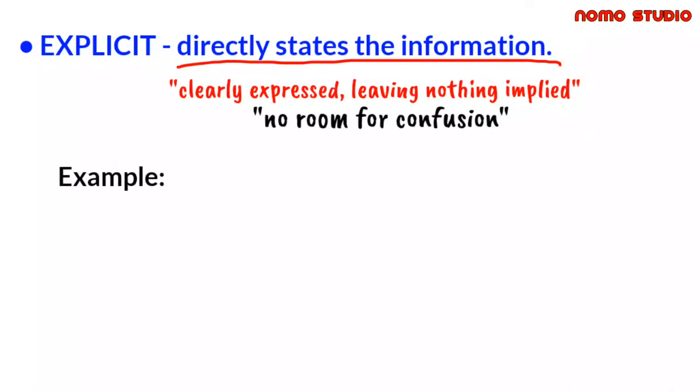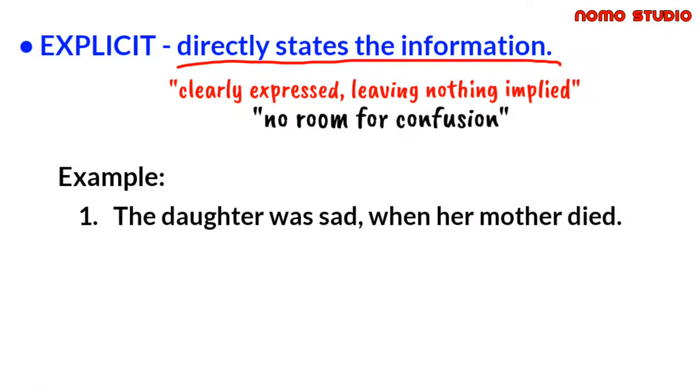For example, the daughter was sad when her mother died. What does it mean? It directly states the information. Since it is clearly stated here that the daughter was sad, why she was sad, because her mother died. The statement uses the exact word sad. It leaves us no confusion. And since we do not have to infer just to understand the context, therefore, the statement is explicit, which means it directly states the information.